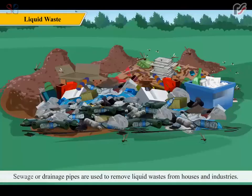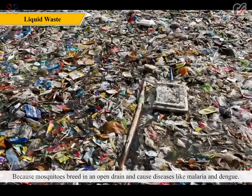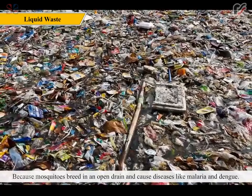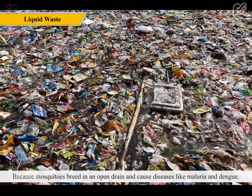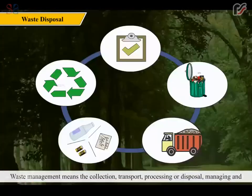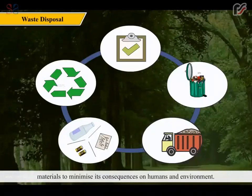Sewage or drainage pipes are used to remove liquid waste from houses and industries. An open drainage system is a health hazard because mosquitoes breed in open drains and cause diseases like malaria and dengue. Waste management means the collection, transport, processing, disposal, managing, and monitoring of waste materials to minimize its consequences on humans and the environment.